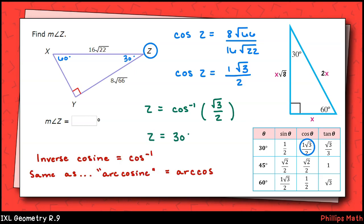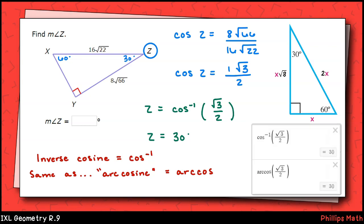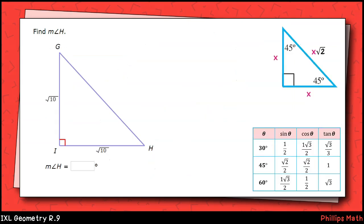Real quickly, I want to point out that some textbooks, websites, and calculators refer to the inverse cosine as arc cosine, or arccos for short. You can type that command in Desmos, for example, and it works just the same as using the inverse cosine with the negative 1 exponent. Let's look at another.